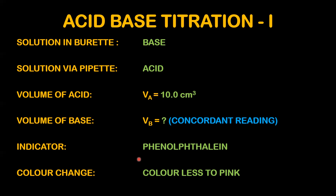If the base is strong, then in that situation your acid-base titration uses phenolphthalein as the indicator. When phenolphthalein is used, the burette contains the base and the pipette contains the acid — so the solution in the pipette will be acid.